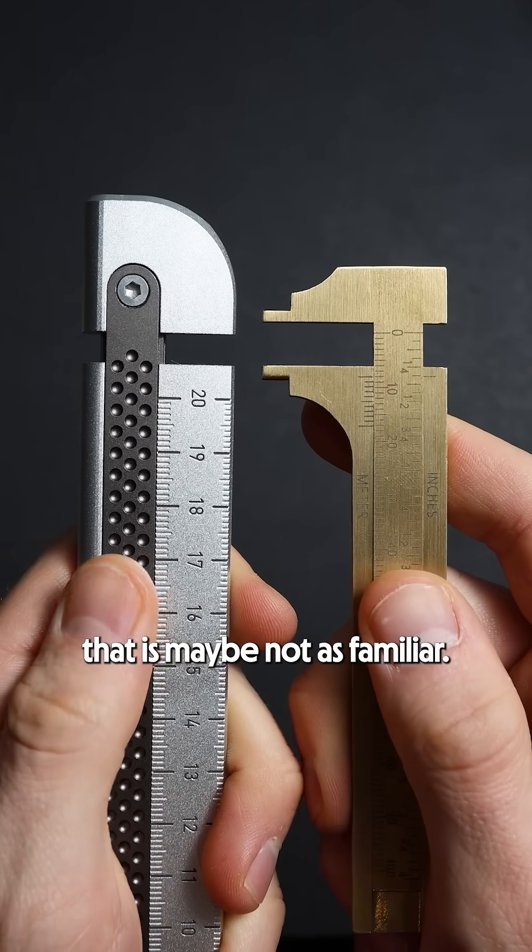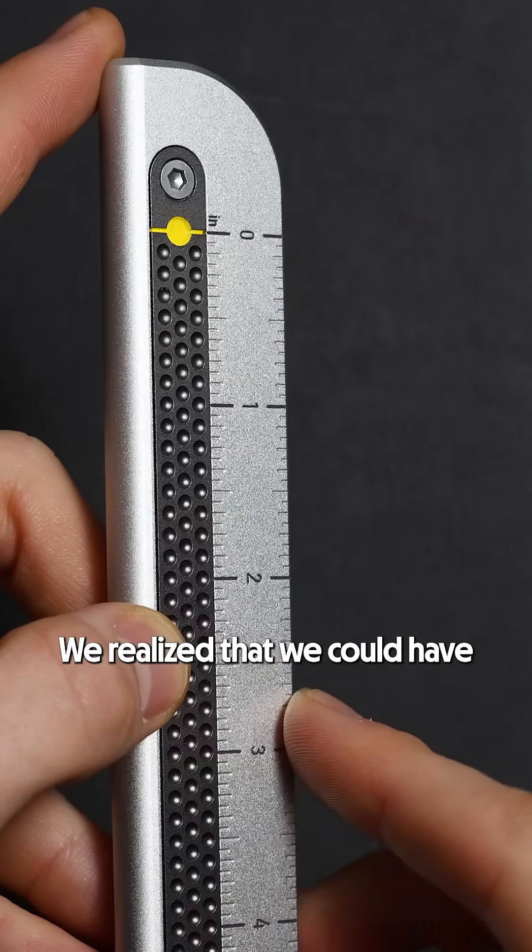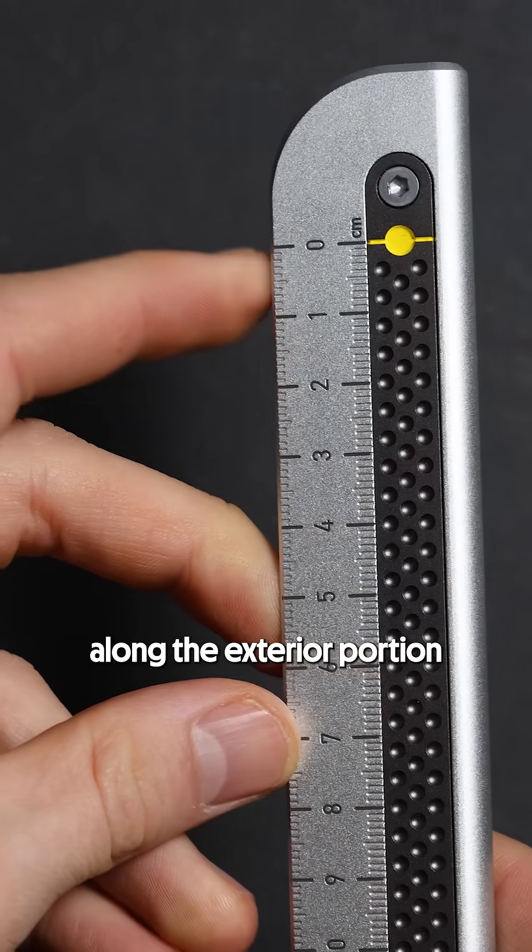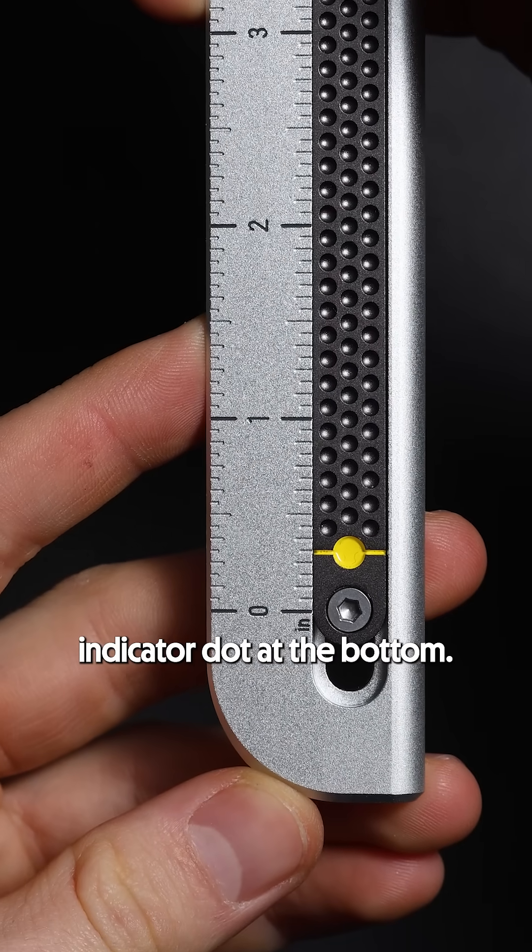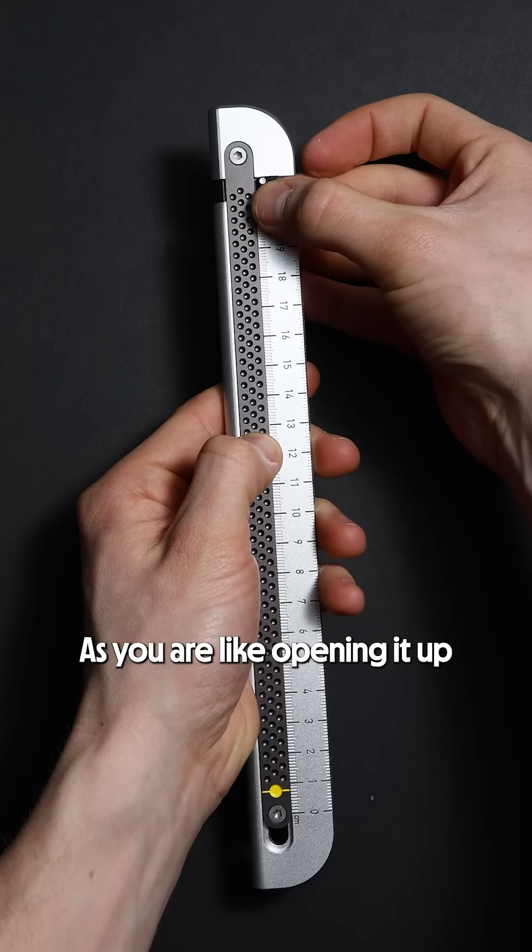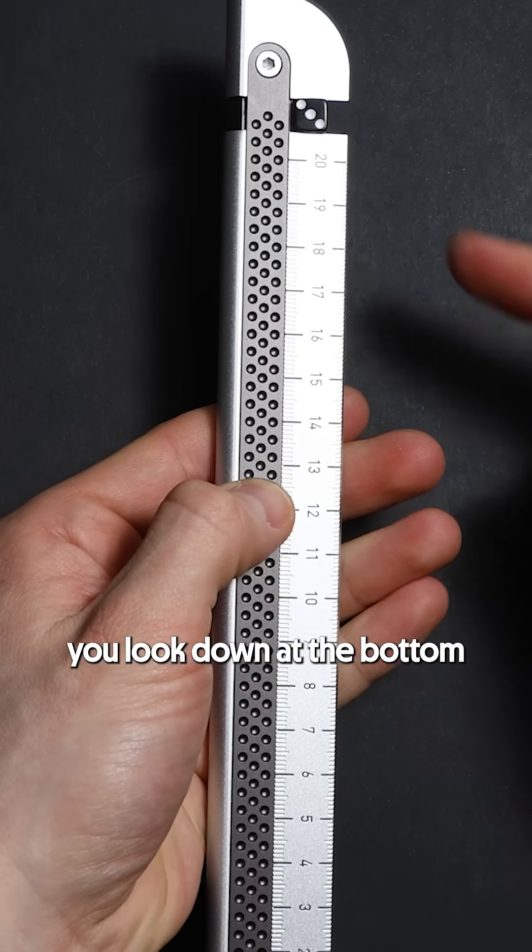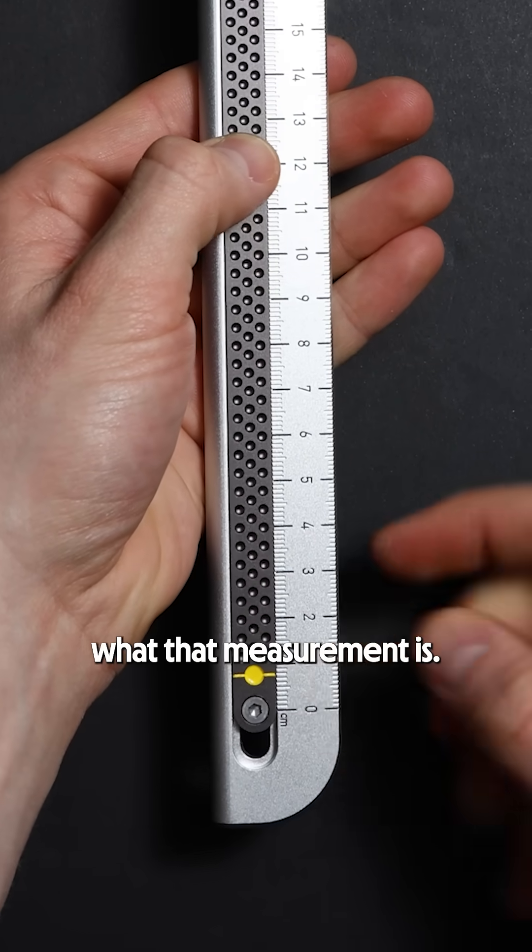We came up with this solution that is maybe not as familiar to people. We realized that we could have all the measurements along the exterior portion of the ruler and essentially have this one indicator dot at the bottom. And so as you are opening it up and measuring something you just have to look down at the bottom to understand what that measurement is.